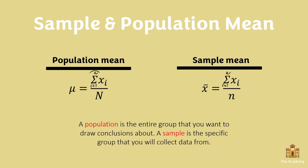Now, this term here means the sum of, okay? So this means that we'll be summing i amount of observations. For instance, if there are 7 observations, we would sum x1 plus x2 plus x3 all the way up to x7.